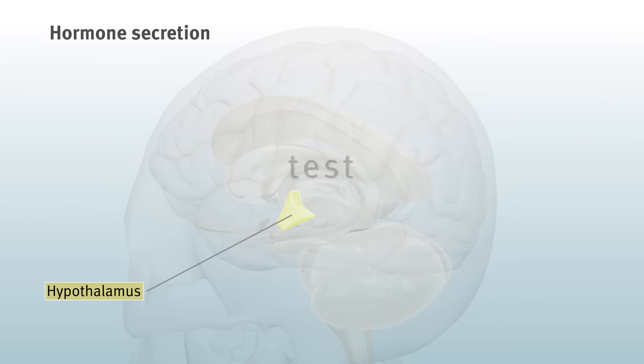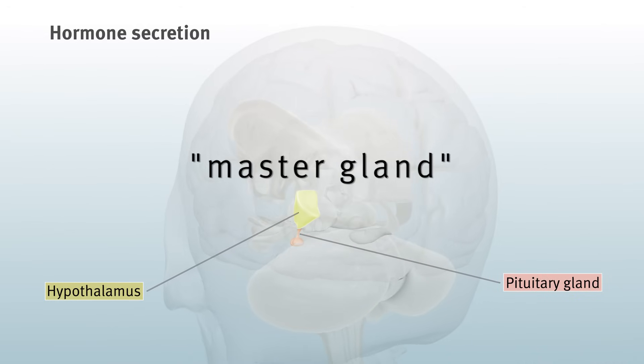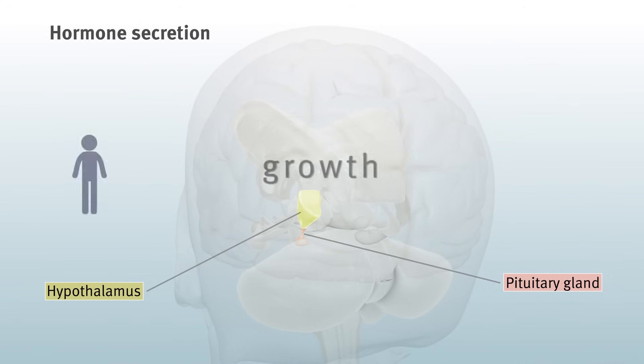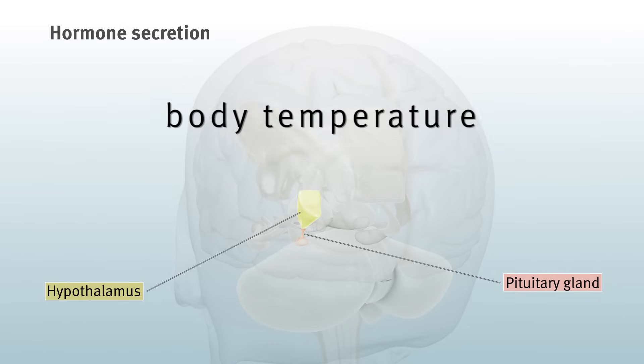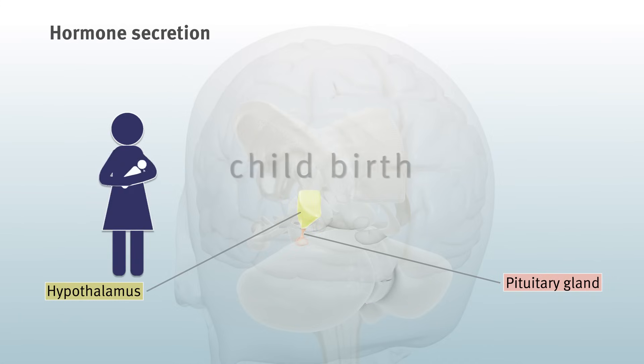The pituitary gland, often called the master gland, which helps control growth, body temperature, pregnancy, and childbirth.